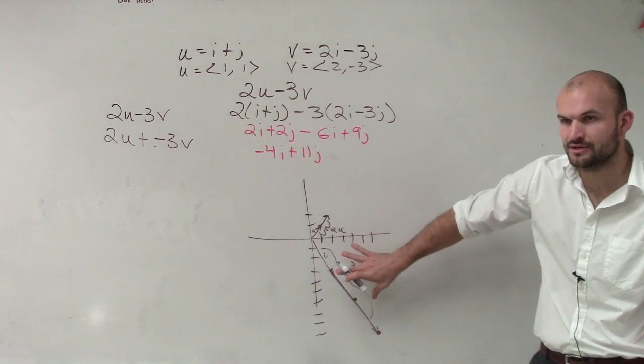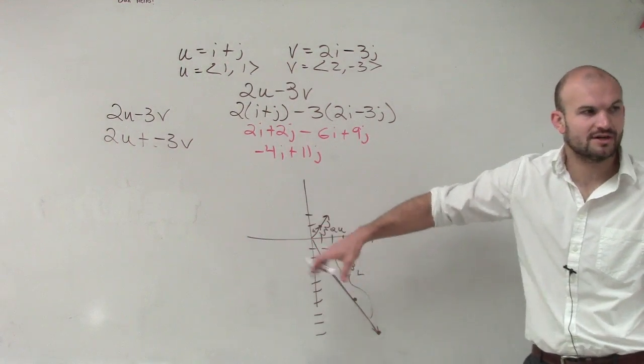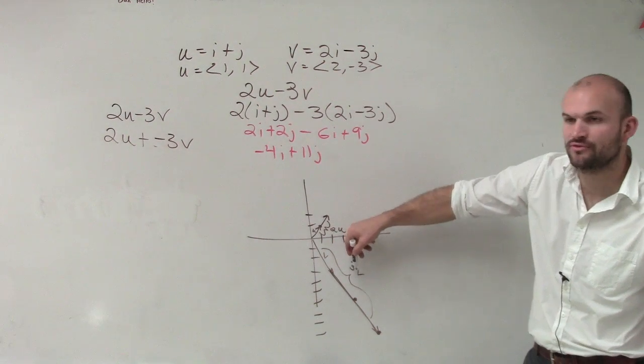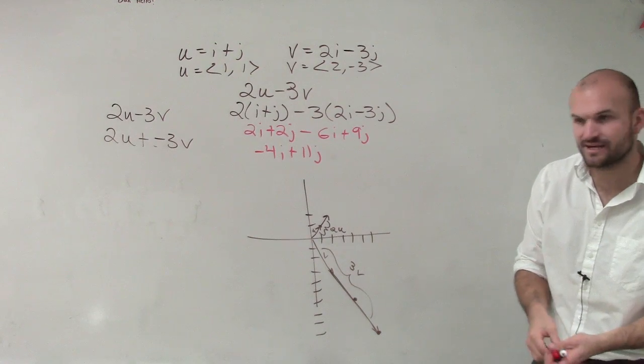All you do is you take one vector, the initial point of one vector, and add it to the terminal point of the other vector. But we don't need to deal with 3v. We need to now deal with negative 3v.